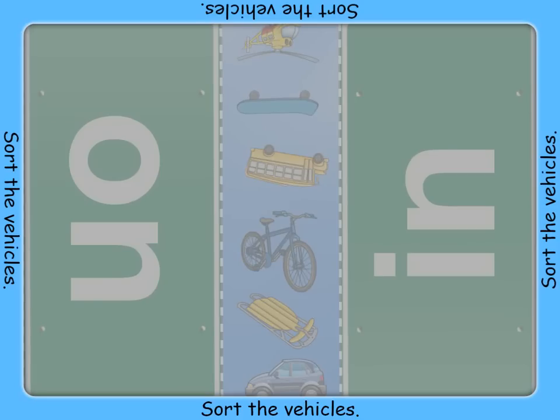Look at the pictures of the vehicles. Do you travel on it or in it? If you travel on it, drag it on to the sign that says 'on.' And if you travel in it, drag it on to the sign that says 'in.'